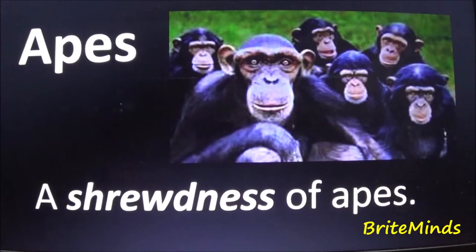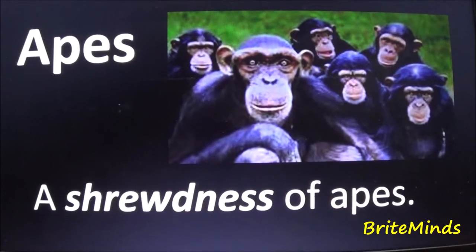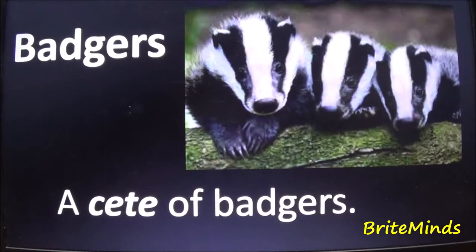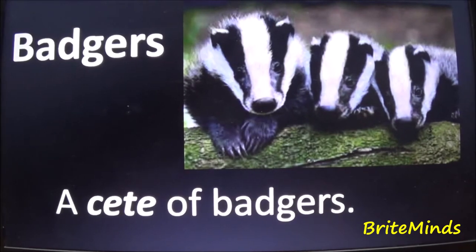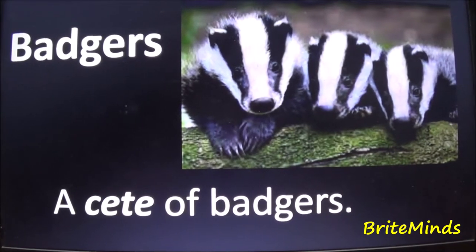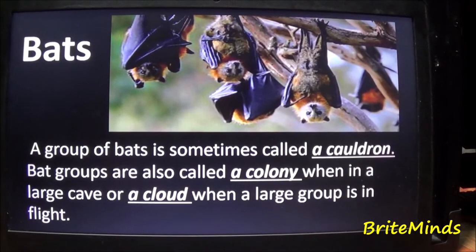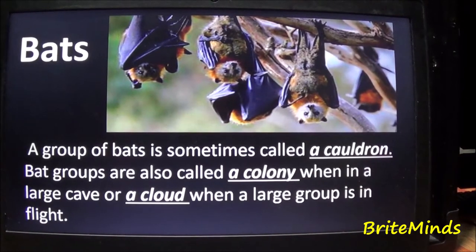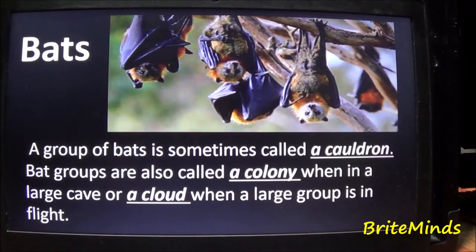Apes: a group of apes is called a shrewdness of apes. Badgers: a group of badgers is called a cete of badgers. Bats: a group of bats is sometimes called a cauldron, but groups are also called a colony.